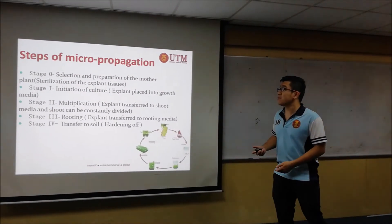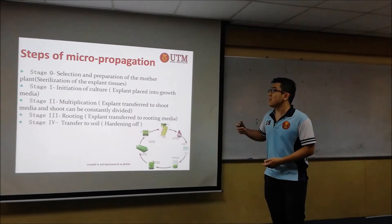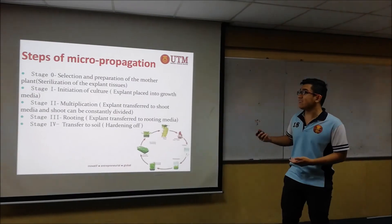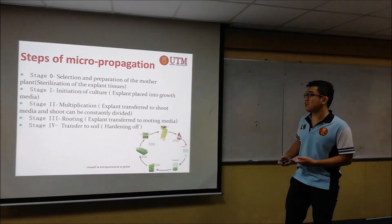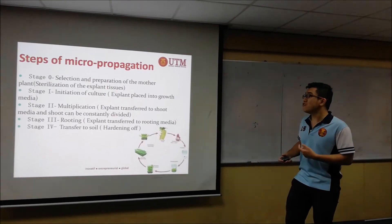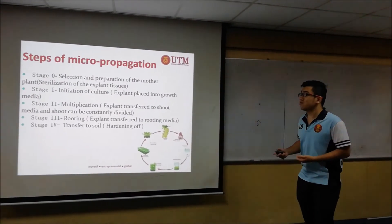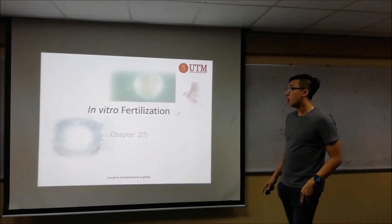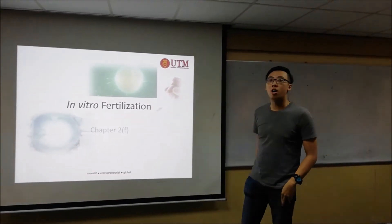These are the steps for micro propagation: first, selection and preparation of the mother plant; next, initiation of culture; followed by multiplication; then rooting; and finally, transfer to soil.